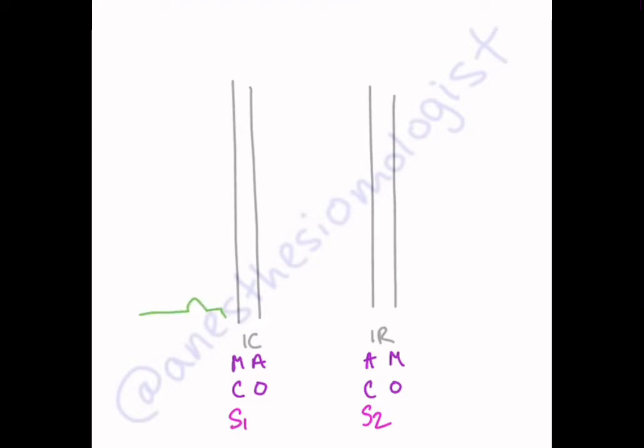We see the P-wave, followed by the QRS complex at the beginning of isovolumetric contraction, and this here is our T-wave.